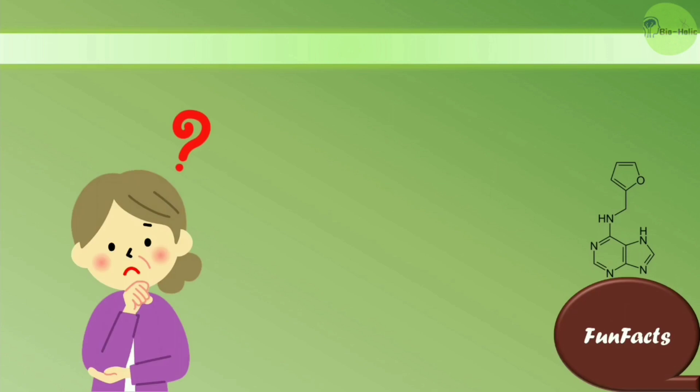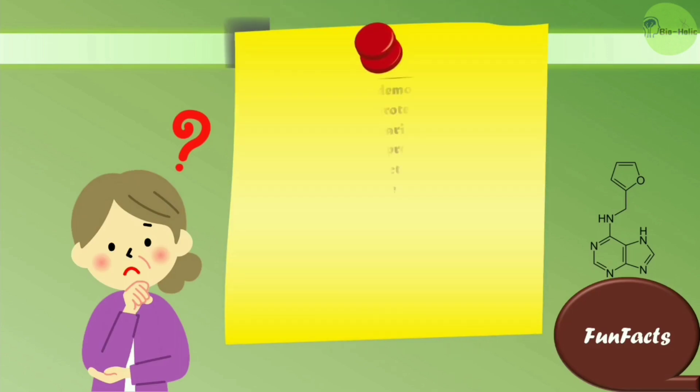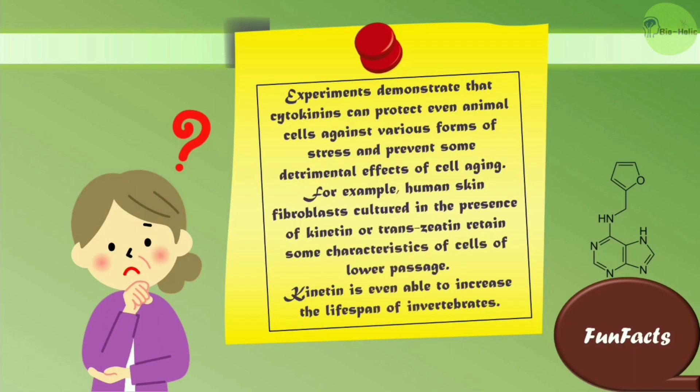A fun fact about cytokinin: experiments demonstrate that cytokinins can protect even animal cells against various forms of stress and prevent some detrimental effects of cell aging. For example, human skin fibroblasts cultured in the presence of kinetin or trans-zeatin retain some characteristics of cells of lower passage, and kinetin is even able to increase the lifespan of fruit flies.